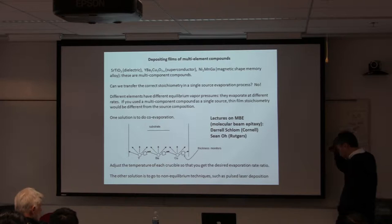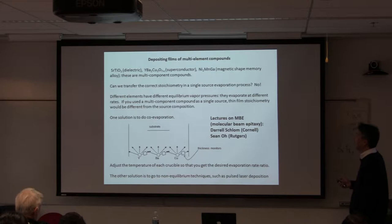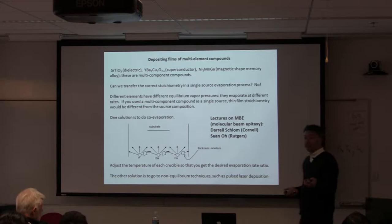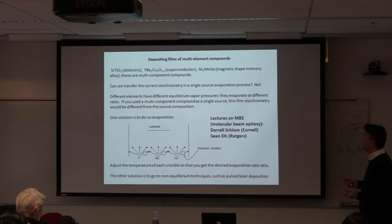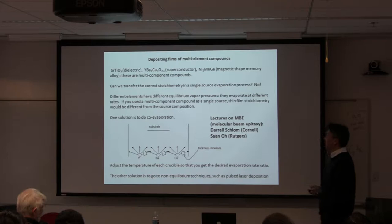The question is how to use evaporation for interesting multi-component quantum materials such as strontium titanate, YBCO, nickel, manganese, or gallium. Can you take a bulk compound, do evaporation, and get a correct stoichiometric film? The answer is no, because each element has its own equilibrium vapor pressure. Whatever temperature or input power you apply to the source dictates the vapor pressure, and that is different for different elements.